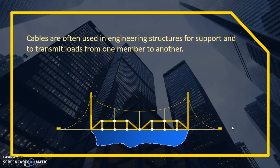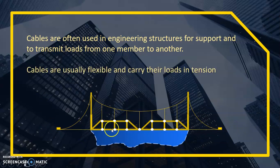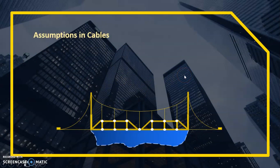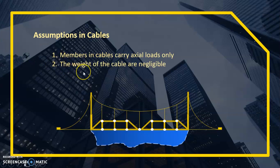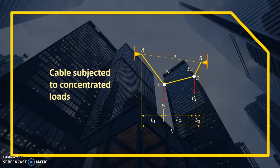Just like this figure, we use cables for bridges. Cables are usually flexible and carry their loads in tension. We also have assumptions in our cable structures: first, members in cables carry axial loads only — no shear and no moment. Second, the weight of the cable is negligible, so we remove the cable's own weight.